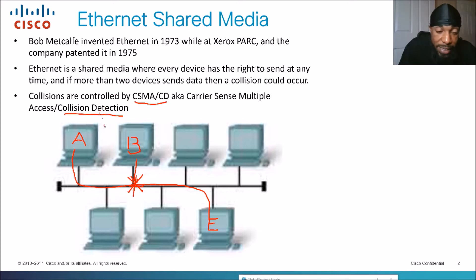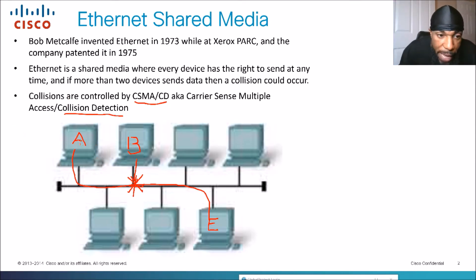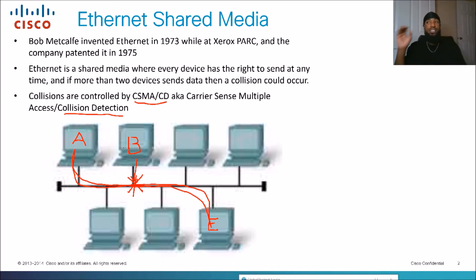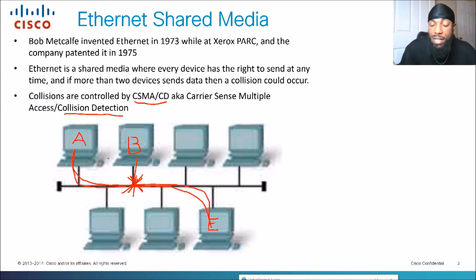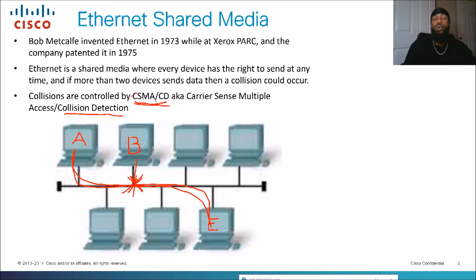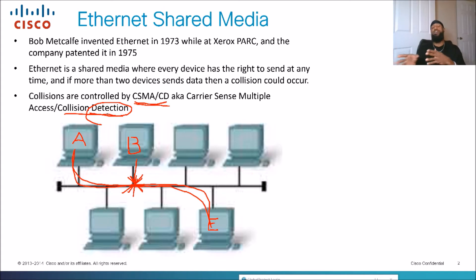As Ethernet became more advanced, they introduced CSMA/CD — Carrier Sense Multiple Access Collision Detection. This technology allows us to stop collisions from happening on the network. When computer A wants to send traffic to computer E, CSMA/CD allows computer B to listen first to see if there's any traffic. If it hears no traffic, it transmits. If it does hear traffic, it waits. That way collisions are avoided — CSMA/CD detects collisions and makes devices wait before transmitting.